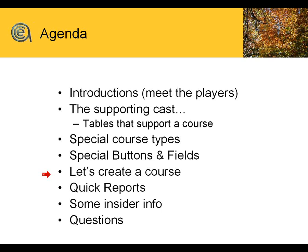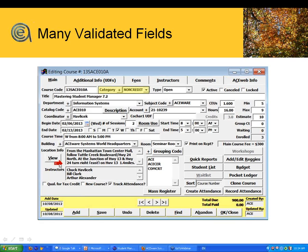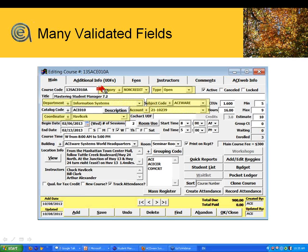On the course screen, the course title and the code are honestly the only required fields. Technically, you can build a course without anything else. There are a number of validated fields — ones where you'll see a little drop-down next to them to help you get proper data entry. If you are a user with a level four or higher, you'll have the option to create codes within those areas using a plus button. That's usually done by your system admin — the keeper of the flame, the administrator of ACEware Student Manager on your campus.